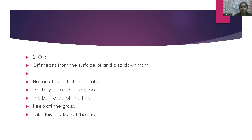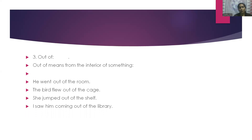The next word is 'off'. Off means from the surface of, and also down from. For example: he took the hat off the table. The boy fell off the tree or off the roof. The next word is 'out of'. Out of means from the interior of something. For example: he went out of the room. The bird flew out of the cage.